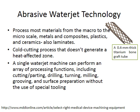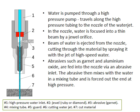Here is an image of a titanium bone graft tube, 0.4 millimeters in thickness, cut using this technique. How it works: water is pumped through a high pressure valve and travels along pressure tubing to the nozzle, where it is focused into a thin beam by a dual orifice. The beam of water is ejected from the nozzle, cutting through the material by spraying it with a high speed jet. Abrasives such as garnet and aluminium oxide can be added through an abrasive inlet, mixing with the water in a mixing tube and forced out at high pressure.